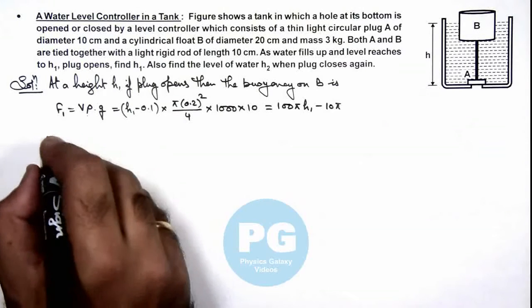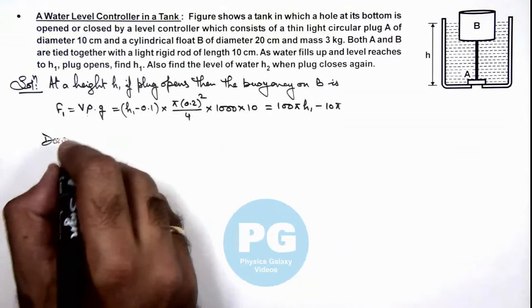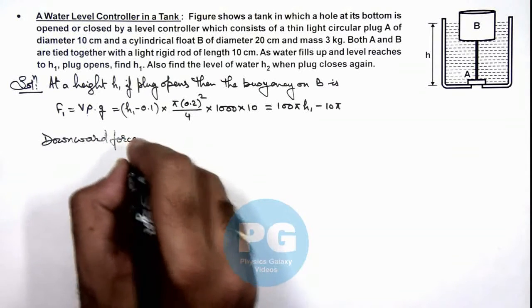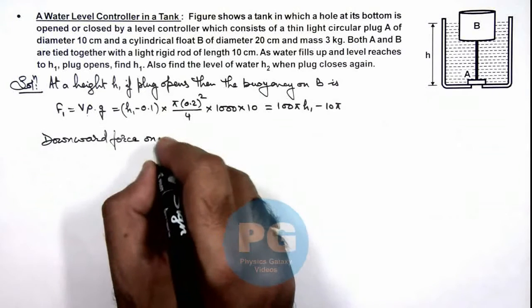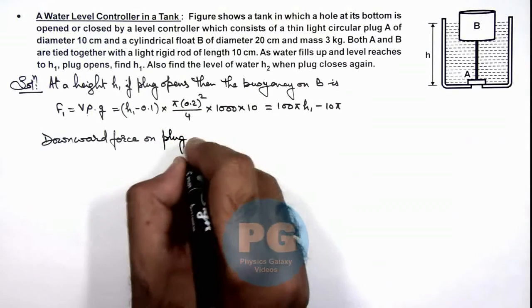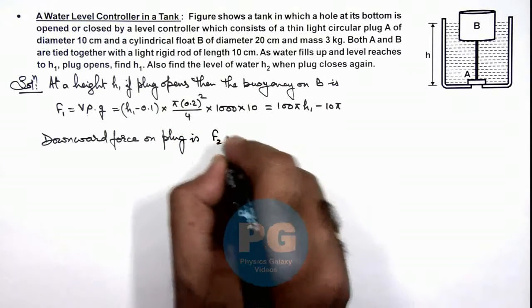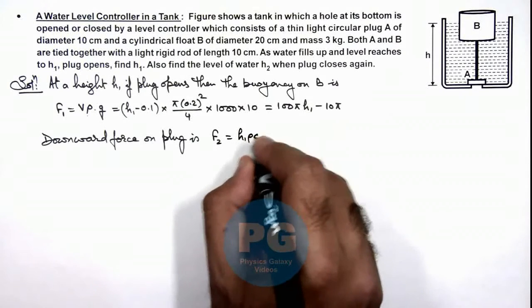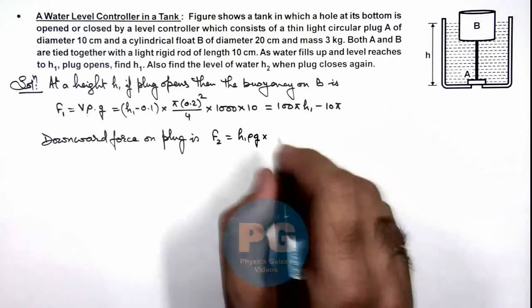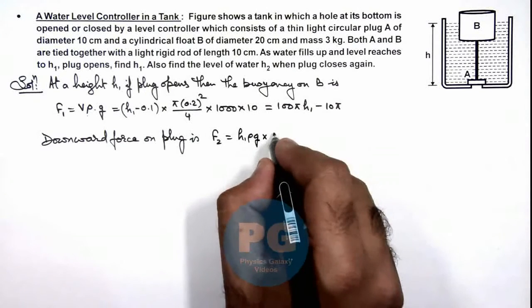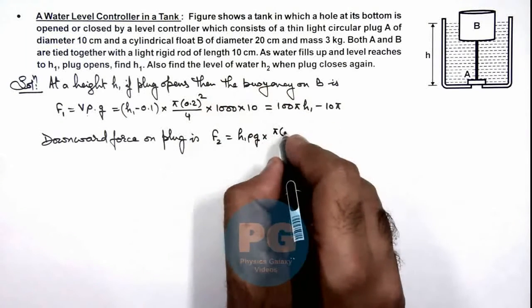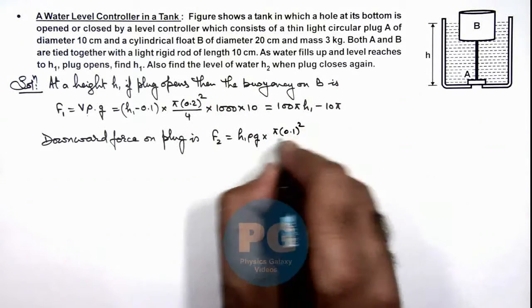If we calculate the downward force on plug A, say this is F₂, then its value can be written as bottom pressure h₁ρg multiplied by its cross sectional area π(0.1)²/4.